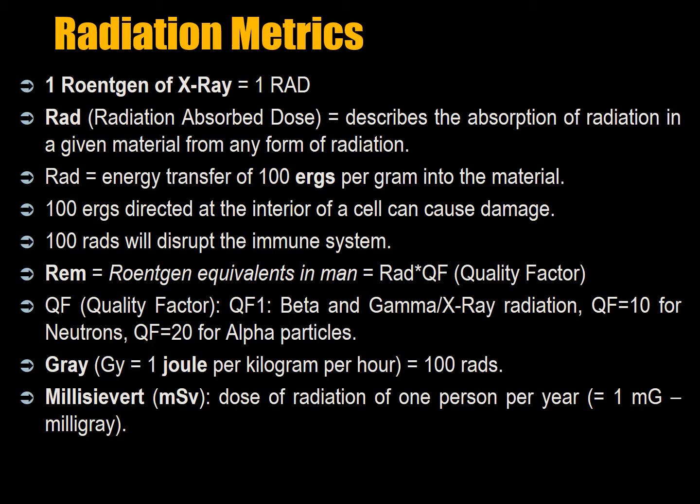A REM is a Roentgen equivalent in man, which is equal to the RAD times a quality factor. The quality factor is a measure of the strength of the radiation emitted. Beta, gamma, and X-ray radiation has a quality factor of 1. Neutrons are a quality factor of 10 — an enormous increase. Neutrons are 10 times more damaging than X-ray or gamma. And then a quality factor of 20 for alpha particles.